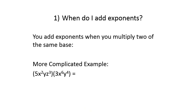Let's take a look at a more complicated example. Suppose we have five x squared y z to the third, times three x to the sixth y to the fourth. Since the two parentheses are next to each other, everything inside the first parentheses is going to be multiplied by everything in the second. We always start with our numbers out front, called our coefficients. We start with five and three and multiply those together. Since they're not the same base, we just multiply the numbers: five times three is fifteen.